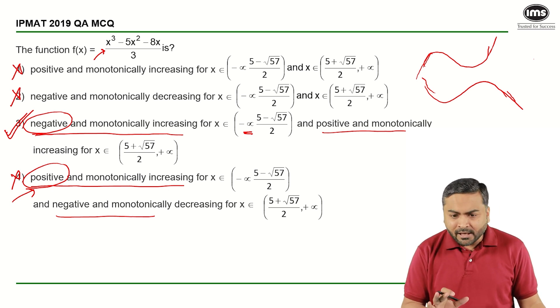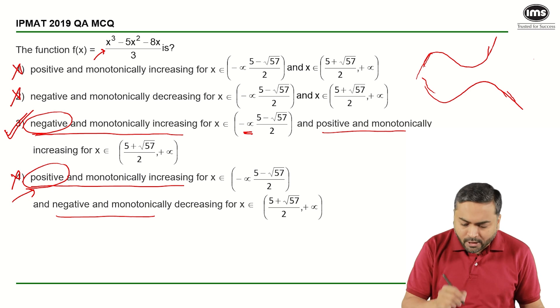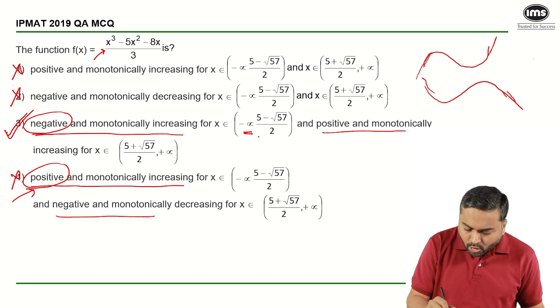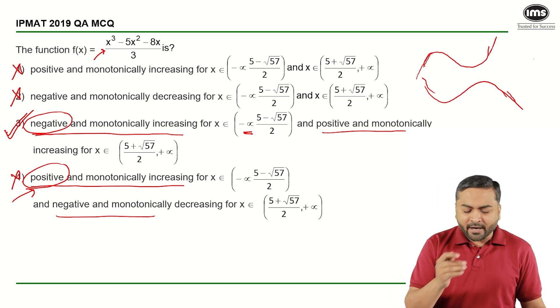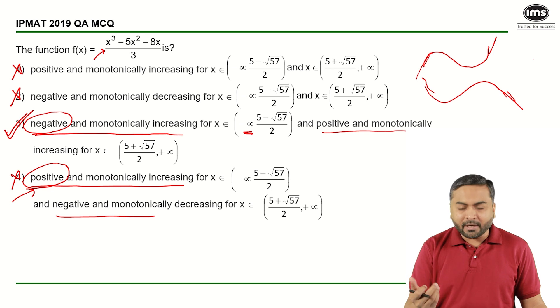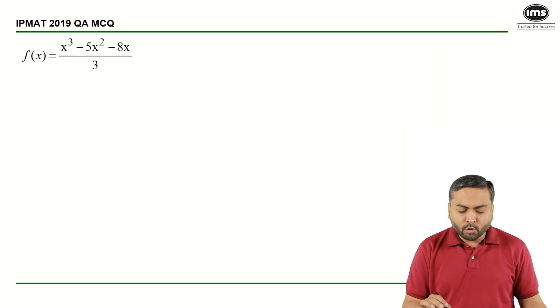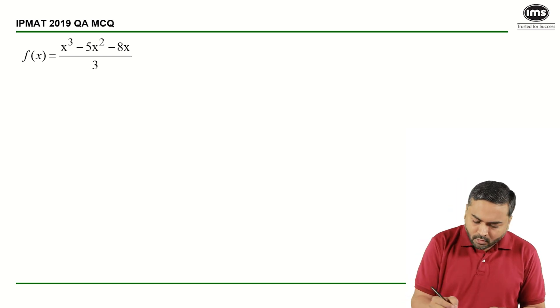Now let us see how we could have actually got this range of x from minus infinity to 5 minus root 57 by 2 and 5 plus root 57 by 2 to infinity. Let us see how can we exactly get this. So this was the function given to us.